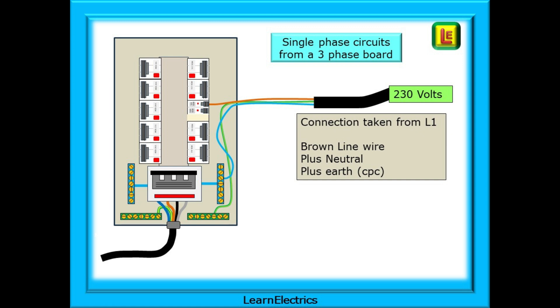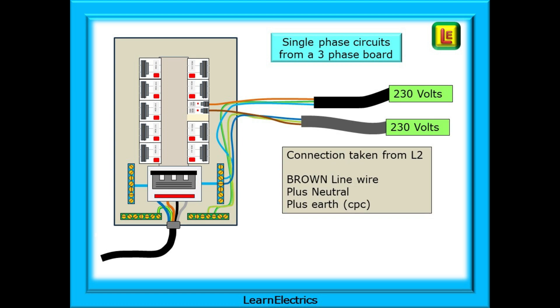Here we've taken the line from the L1 terminal. We can also take a single-phase supply from the L2 terminal. Simply install a single-phase circuit breaker into the appropriate position and make your connections as before: line, neutral and earth. We now have two cables with two brown wires, one in L1 and the other in L2. Be very aware that there is 400 volts difference between these two brown wires. We cannot, we must not, mix the wiring to these circuits. If we do, expect a bang!